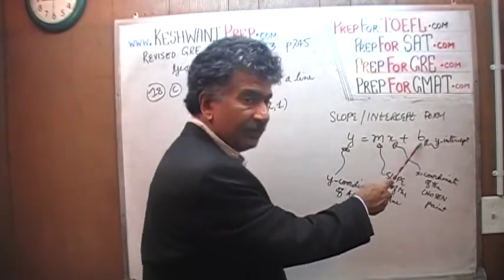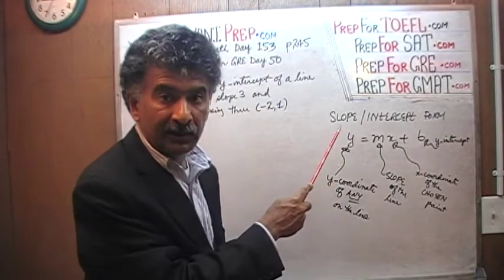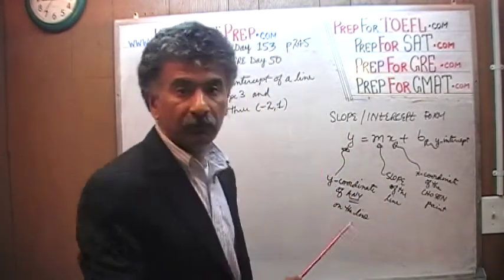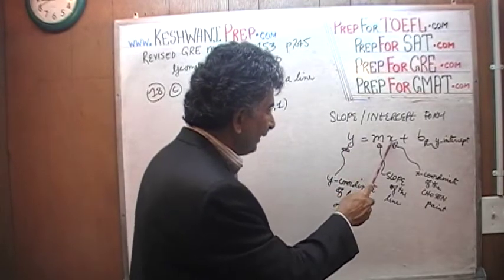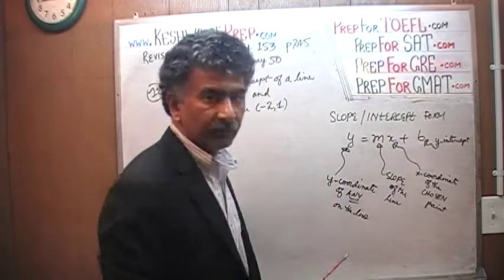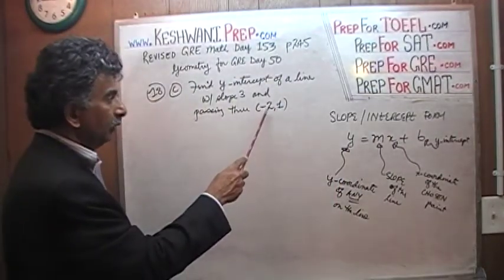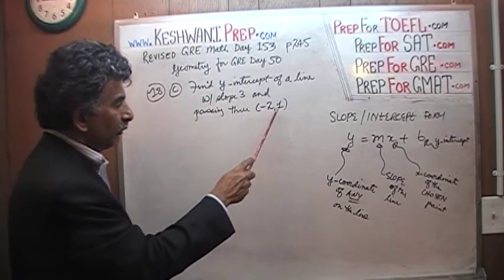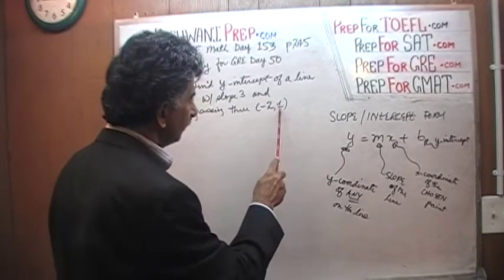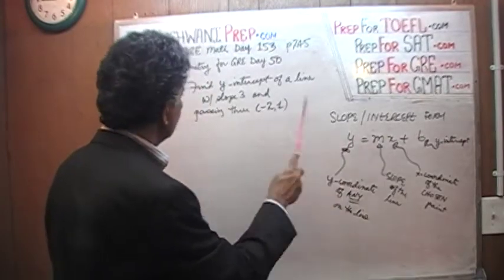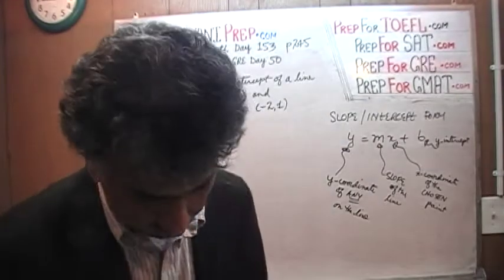If any one of those four pieces is missing and you know the other three, you can solve for the fourth one. For example, if you know the y-intercept and at least one point the line goes through, we can calculate the slope. On the other hand, if we know the slope and at least one point, we can figure out the y-intercept — which is precisely what we need here. The slope is 3, the point is negative 2 and 1, so we solve for b. Very simple, very straightforward.